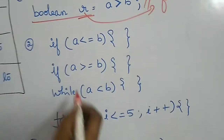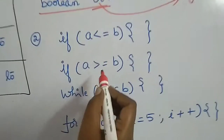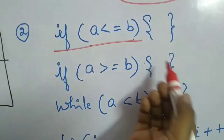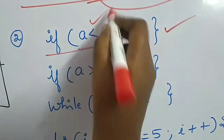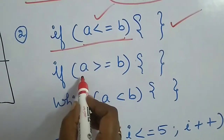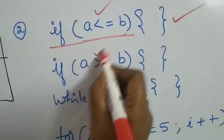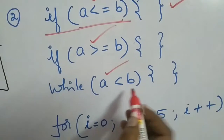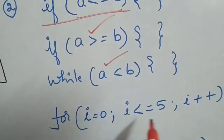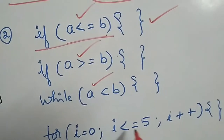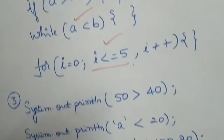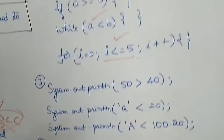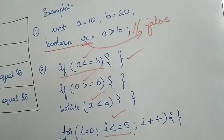I can use relational operators in if, while, and for like this. I can say if (a <= b) — this is absolutely correct. And I can say a >= b. This is how you can use them in if, while, for, and so on. They are used in expressions that control statements — if statements and loops.